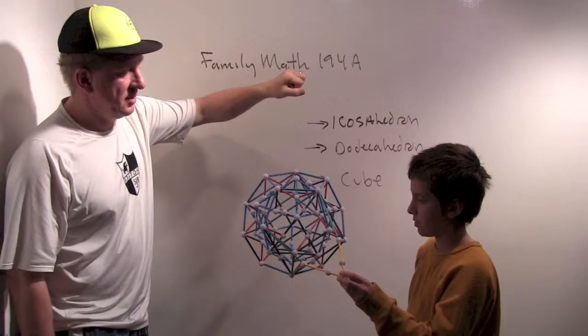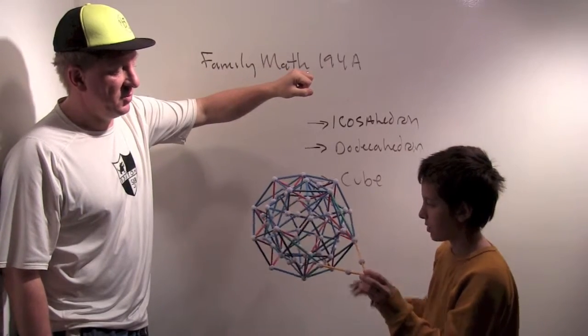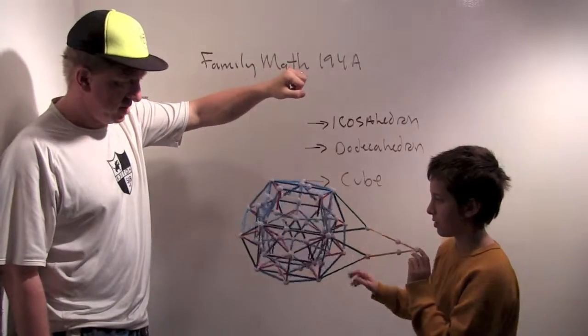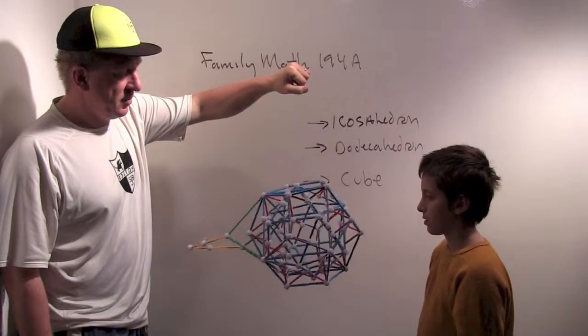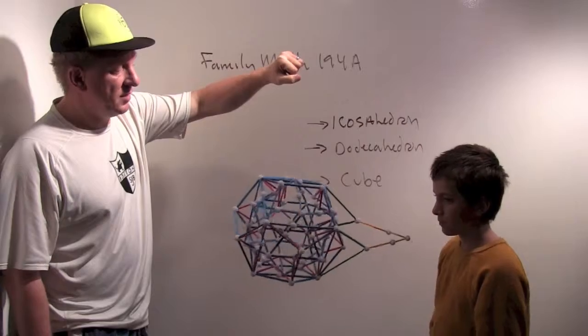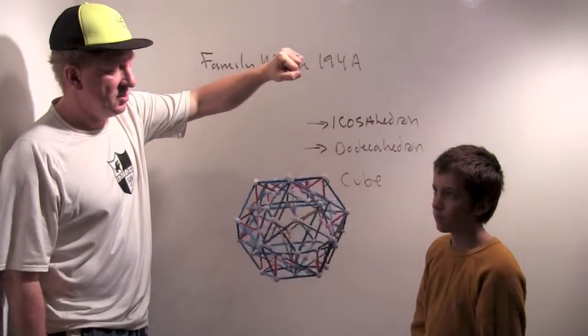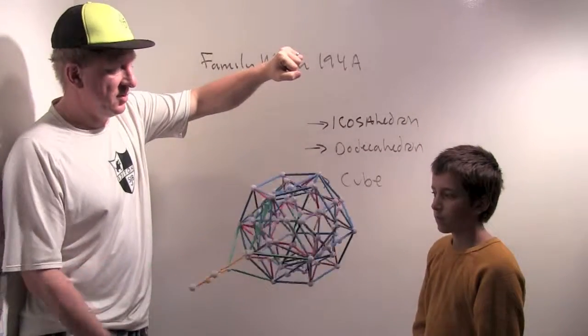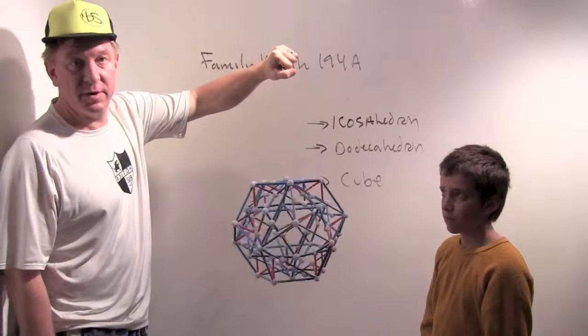Now let's just give it a gentle spin because when it's moving on camera it's easier to see. Just a gentle spin. So hopefully the cube shape shows up, hopefully the dodecahedron pentagons show up, and hopefully the icosahedron triangles show up as that spin. Let's give it a little spin for five more seconds. Okay, we're done.